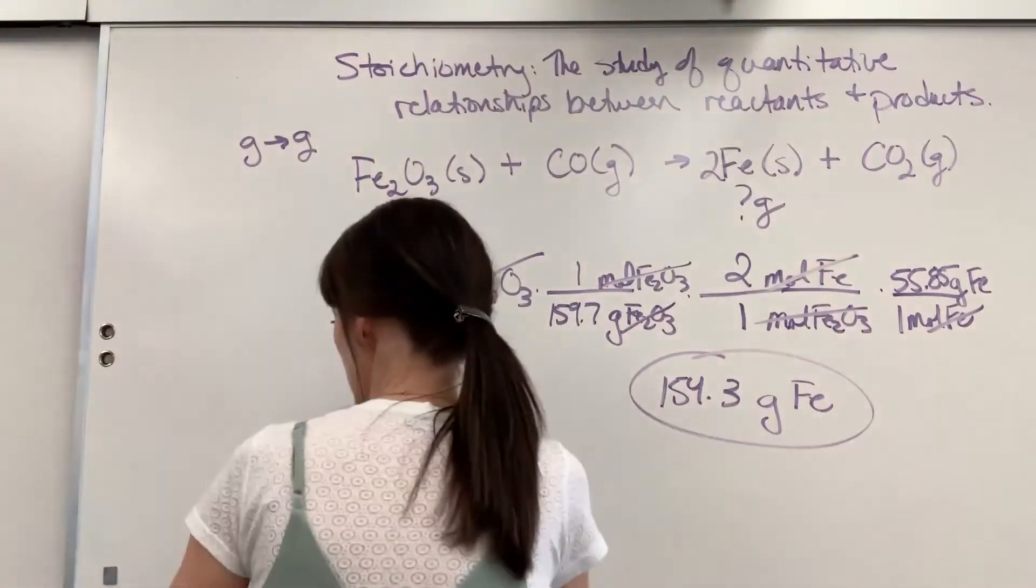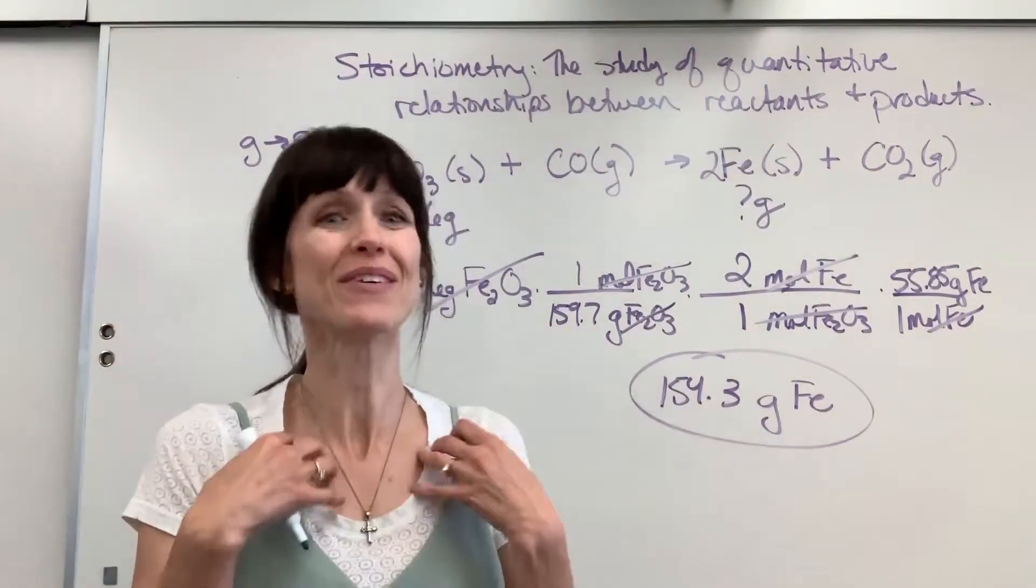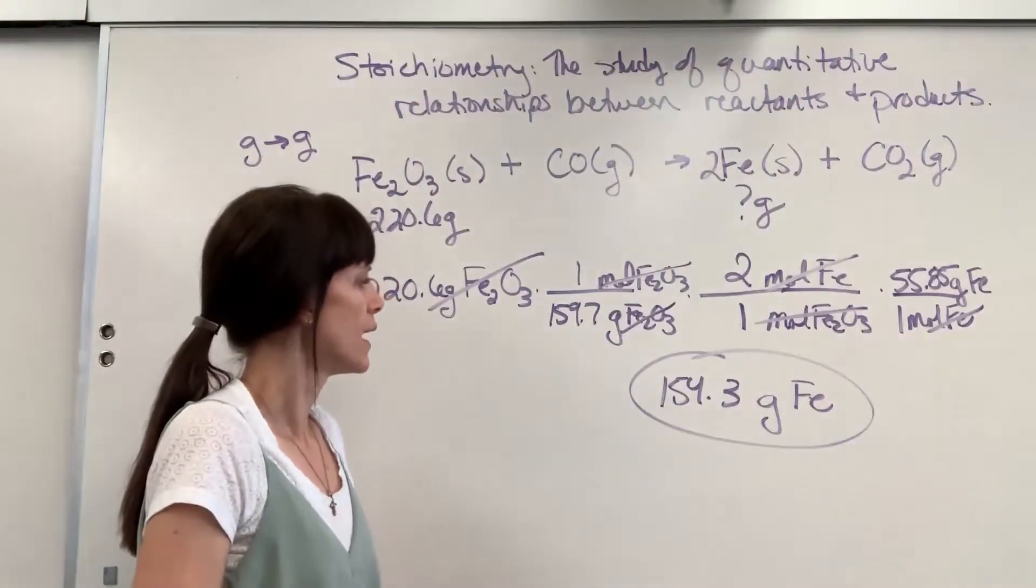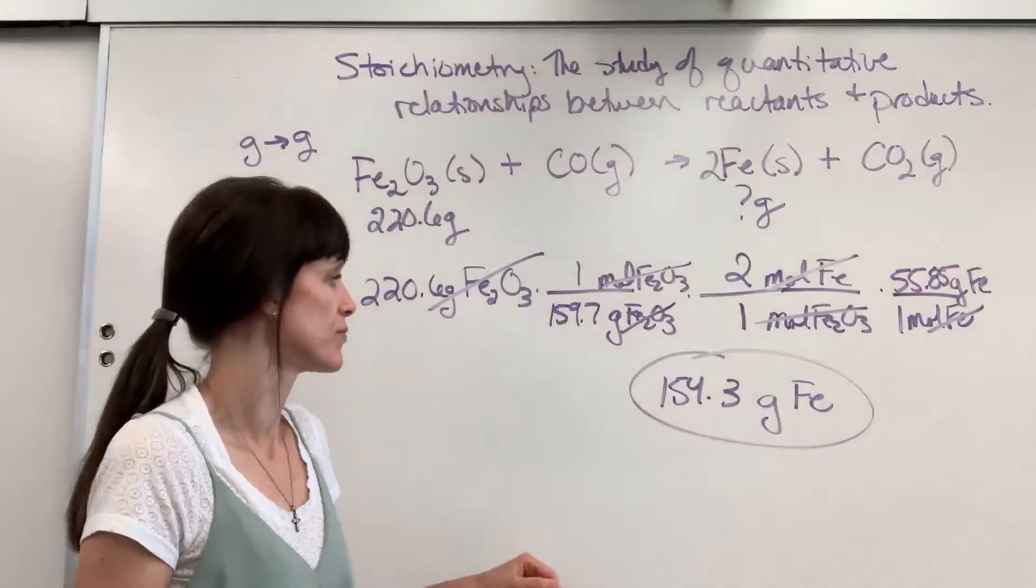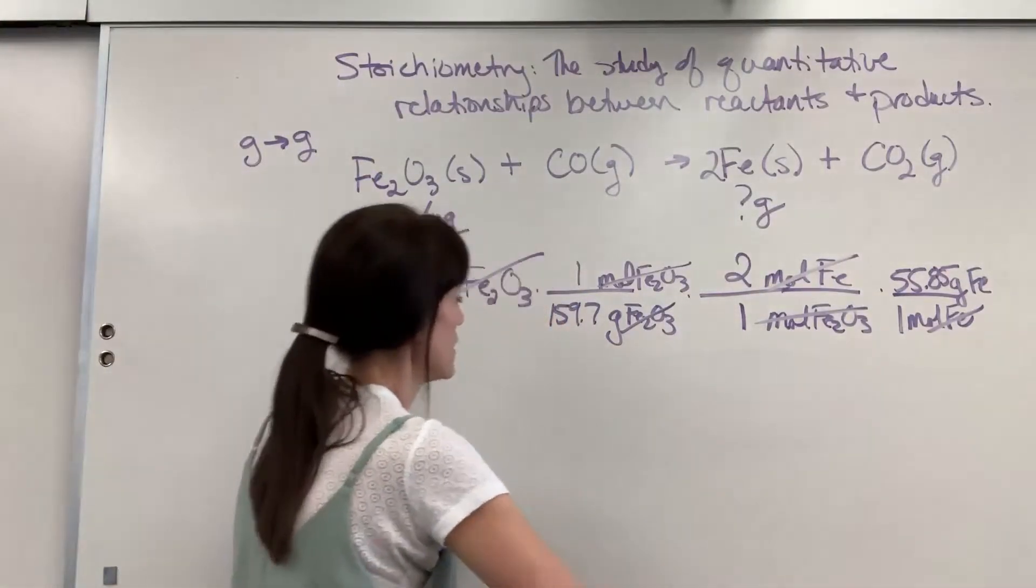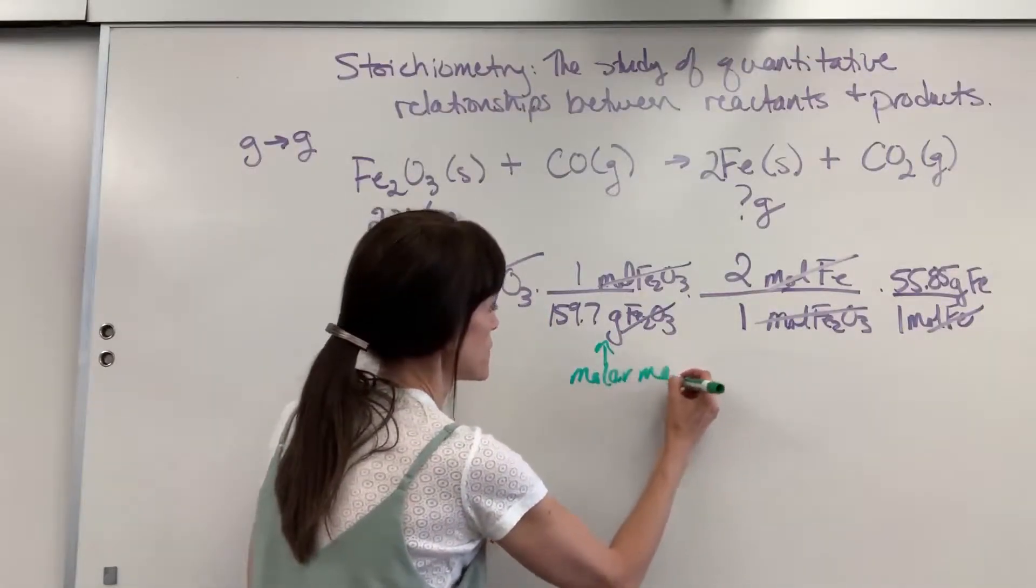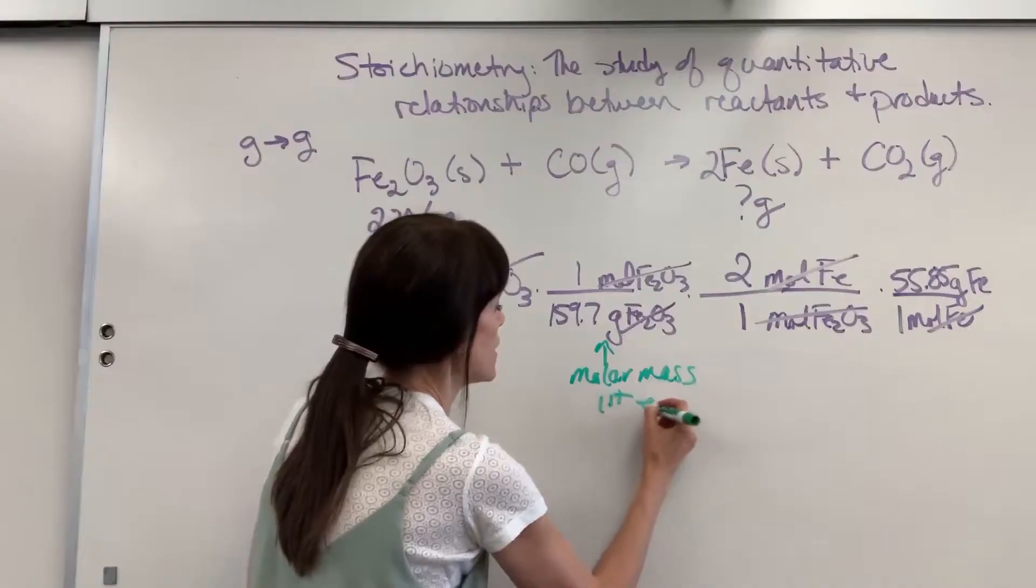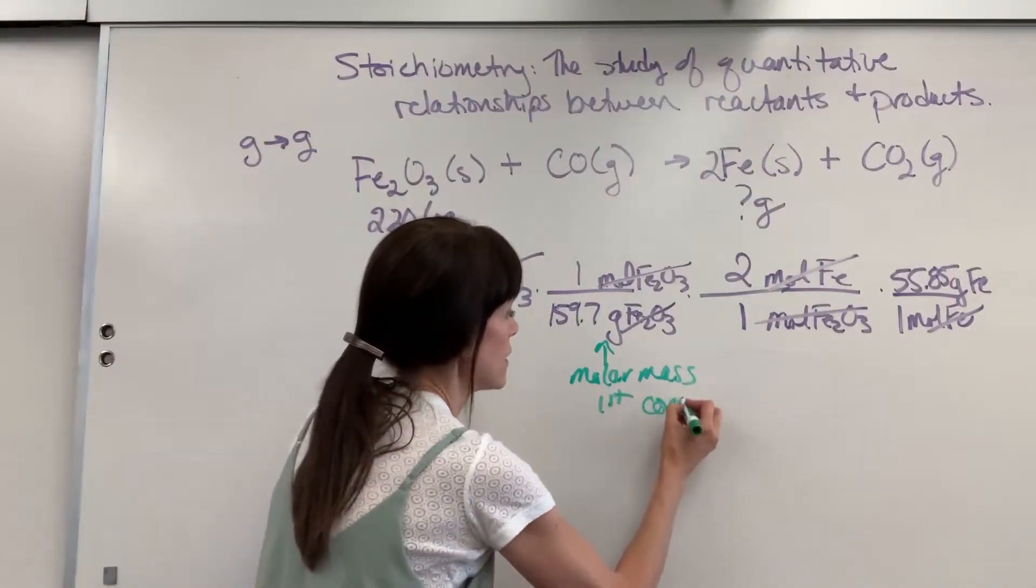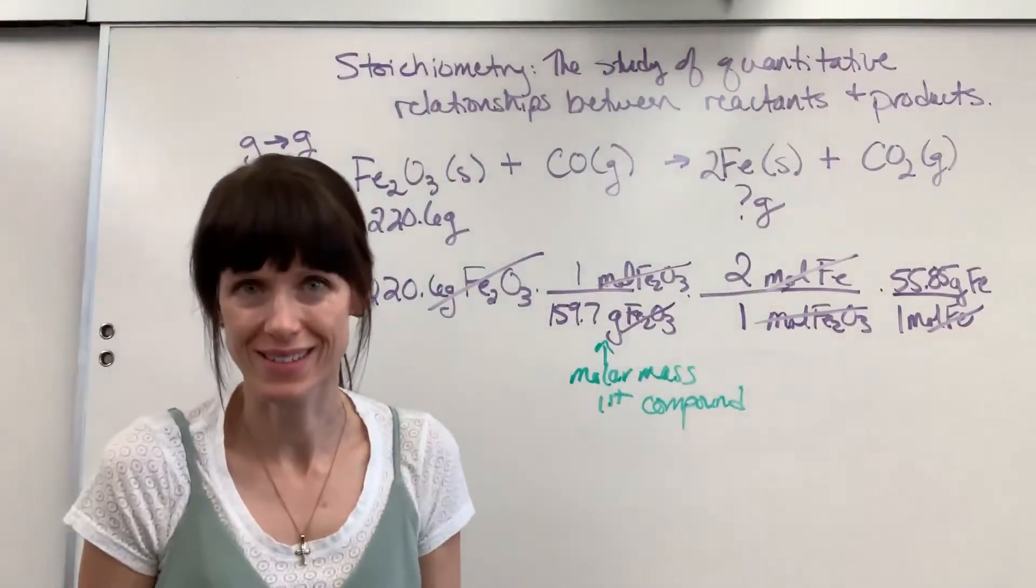Now, I do want to label what we've done here. Since this is what I would consider the bigger stoichiometric equation, let's put down everything that we've written. Right here, we begin with the molar mass. This is going to be the molar mass of the first compound.